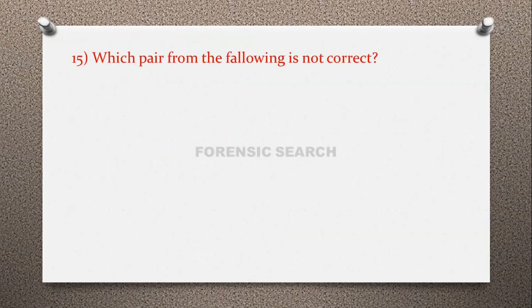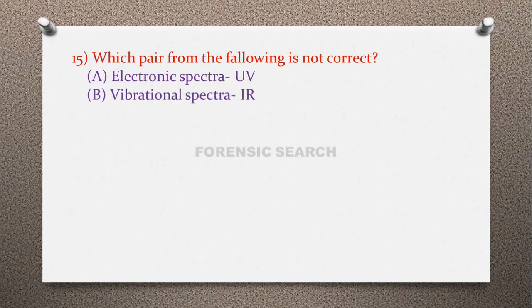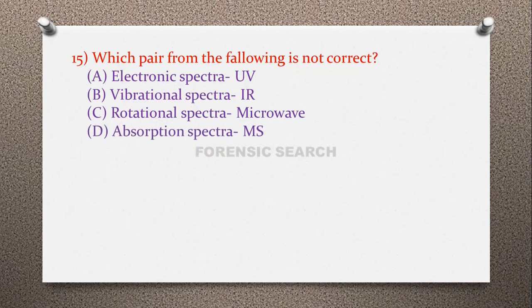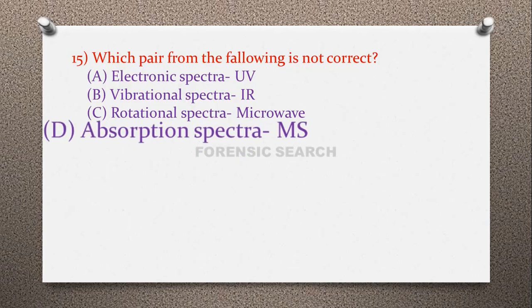Question 15: Which pair from the following is not correct? Option A: electronic spectra – UV, option B: vibrational spectra – IR, option C: rotational spectra – microwave, option D: absorption spectra – mass spectroscopy (MS). The correct answer is option D — absorption spectra is not given by mass spectroscopy, and that is why this pair is not correct.